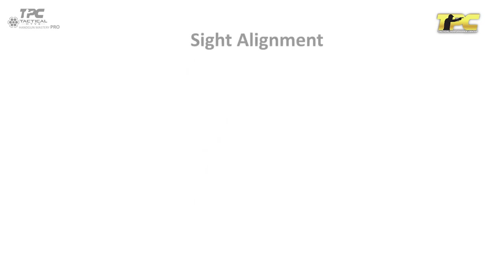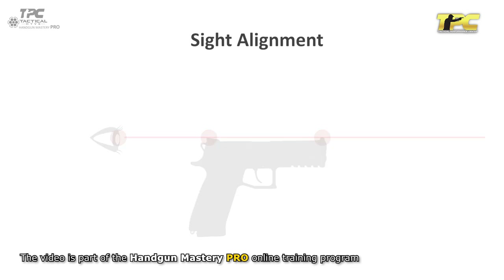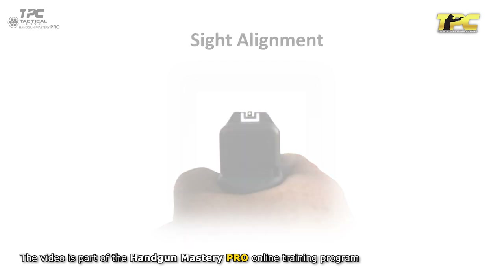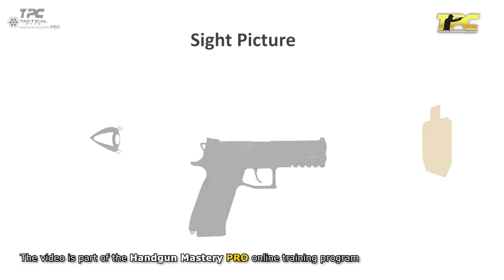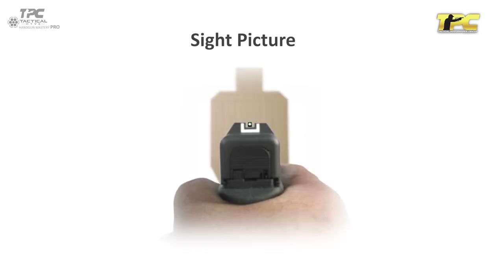Sight alignment is the relationship between three points: front sight, rear sight, and the shooter's eye. Sight alignment is the process of lining your sights up for both vertical and horizontal equilibrium with the line of vision. The sight picture is the relationship with four points: the target, front sight, rear sight, and the shooter's eye. We can also say that the sight picture is the sight alignment superimposed on the desired area of engagement on the target.